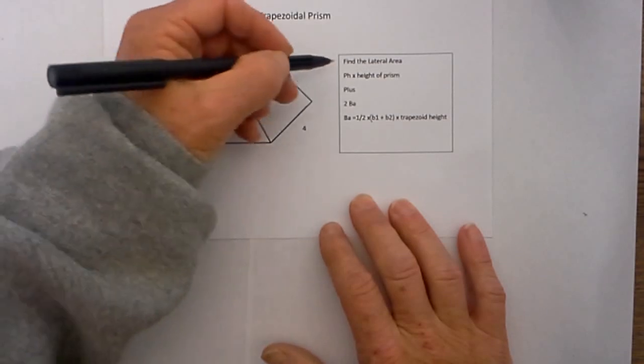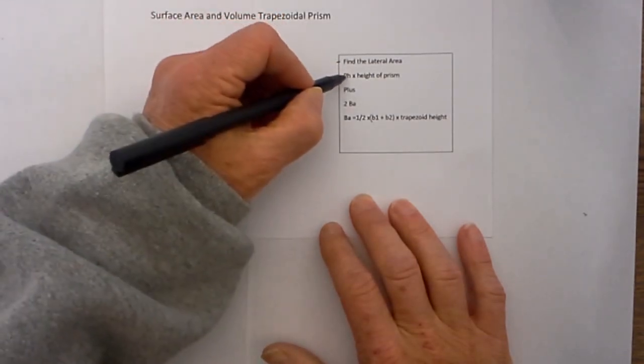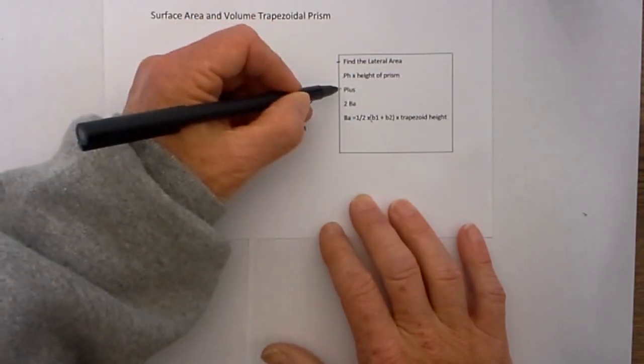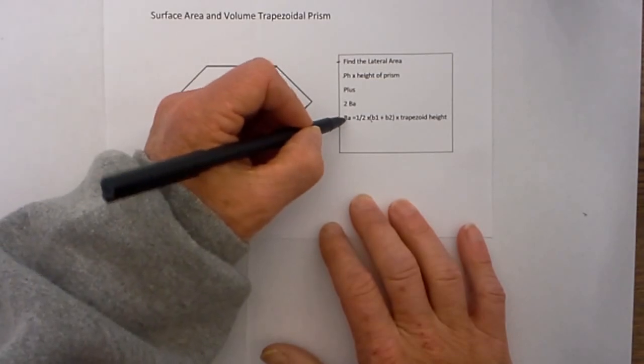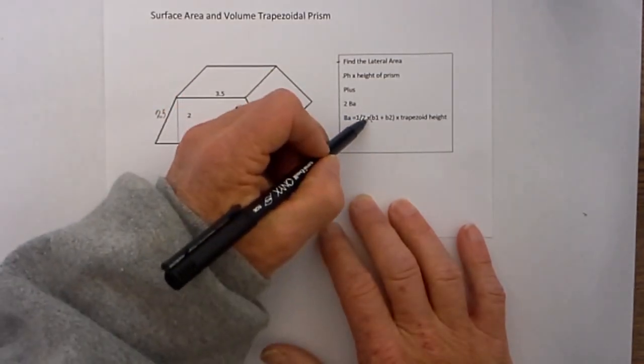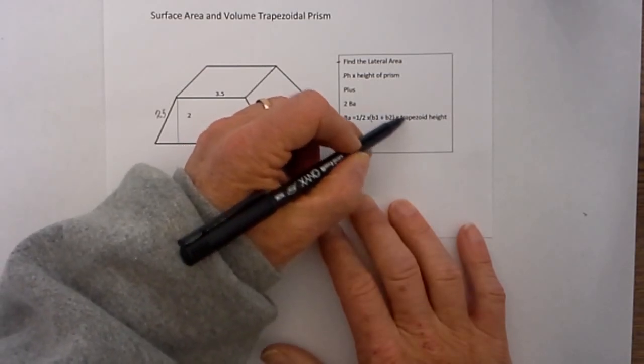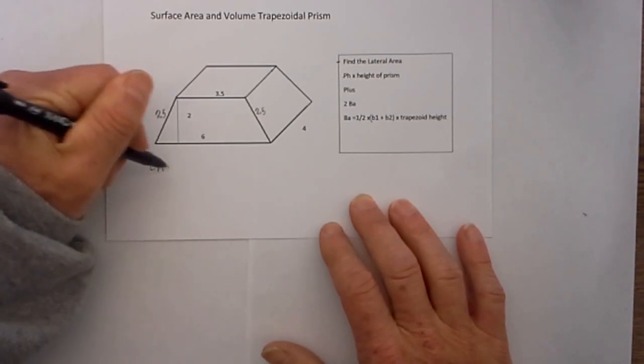Now let's go ahead and find the surface area. The surface area is kind of 2 parts. You first find the lateral area by taking the perimeter times the height of the prism plus 2 base areas. The formula for base area is 1 half times the height of the pyramid times base 1 plus base 2.